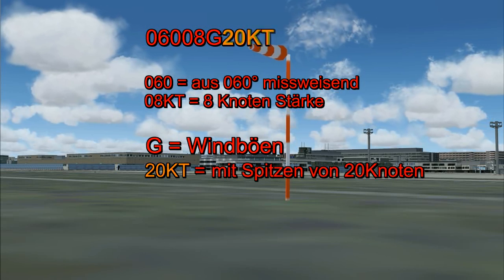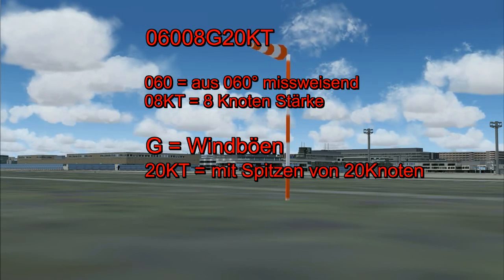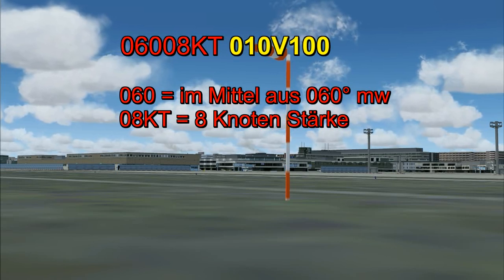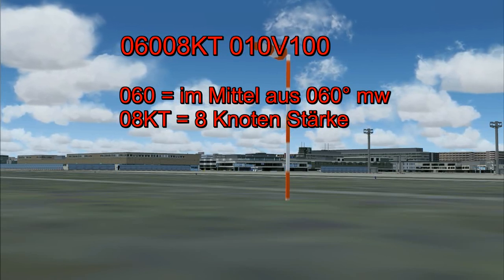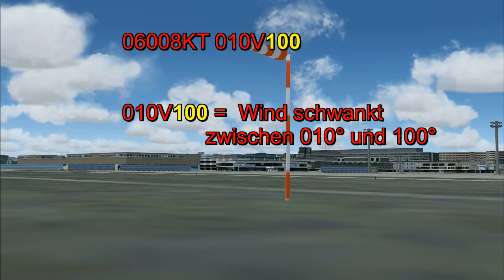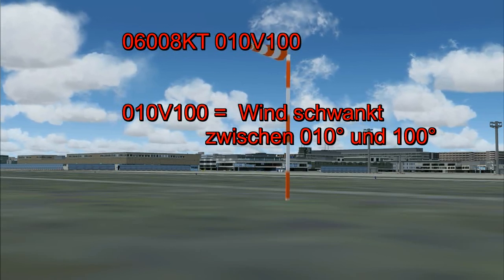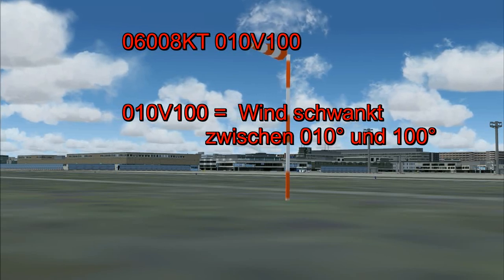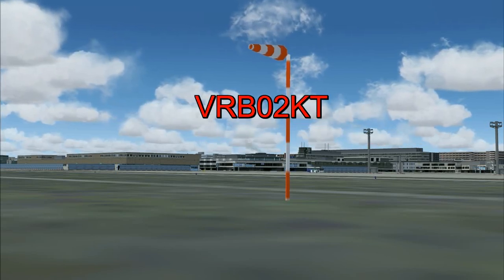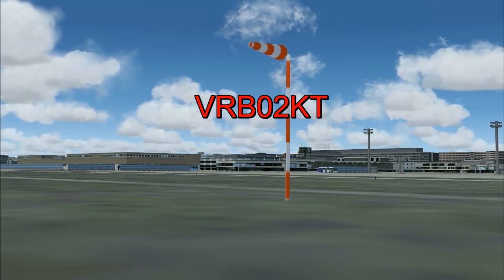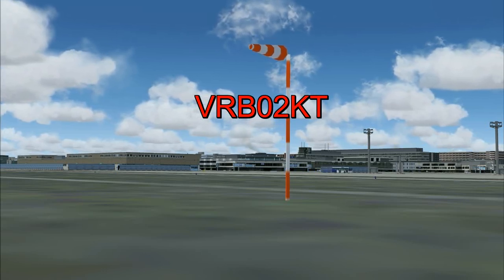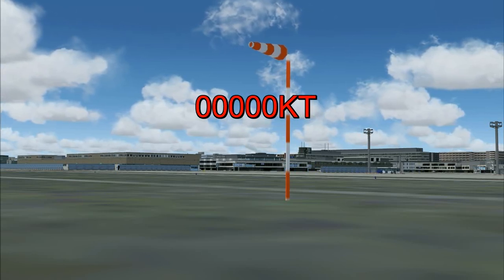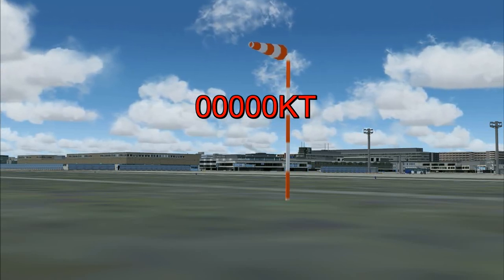Hinter dem G steht die Geschwindigkeit der Windspitzen. Sollte der Wind um mehr als 60 Grad schwanken, steht dies zusätzlich hinter der Windangabe. Die Windschwankung wird durch den linken und rechten Schwankungswert beschrieben, die durch den Kennbuchstaben V für Variation getrennt werden. Bei umlaufenden Winden mit weniger als 4 Knoten wird VRB für Variable angegeben. Stehen in der Windangabe fünf Nullen, ist es Windstill, auf Englisch Calm.